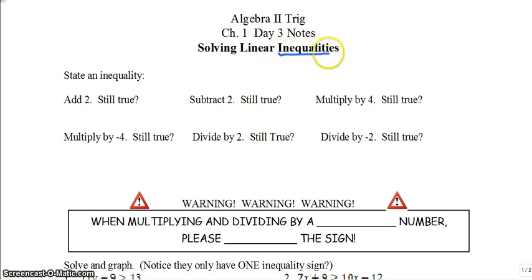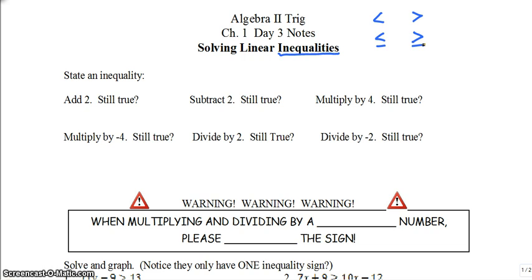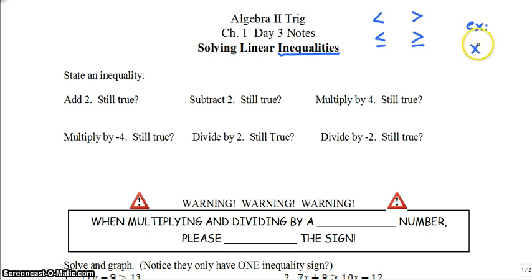Inequalities are different than equations because we use different symbols. We use symbols like less than, less than or equal to, greater than, greater than or equal to. So instead of just a one-number solution like x equals 3, we would have a range of numbers for our solution. The answer would look something like x is less than 3, so all of those numbers that are less than 3 would be our solution. That's the big difference between equations and inequalities.